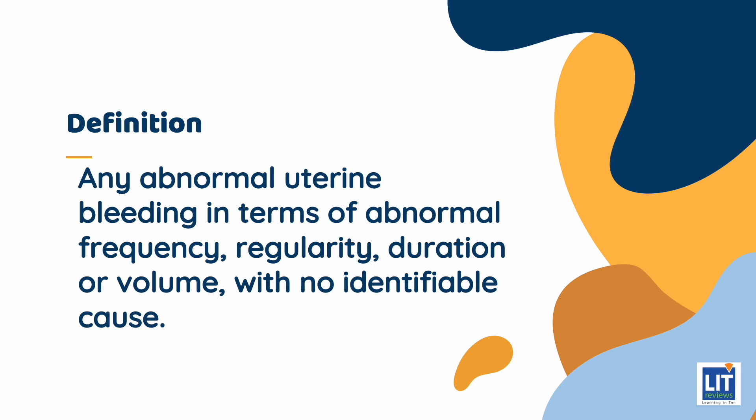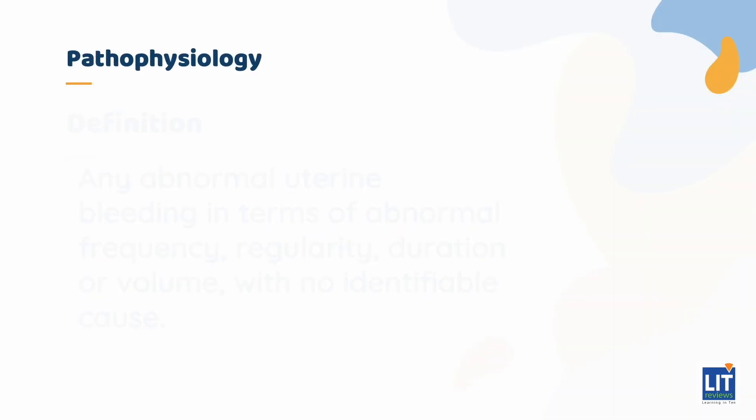It is a diagnosis of exclusion after ruling out pregnancy and all other possible pathological causes, including genital tract pathology and systemic diseases. In a typical menstrual cycle, estrogen is responsible for endometrial proliferation, while the rise and subsequent decline in progesterone is necessary to trigger endometrial shedding.